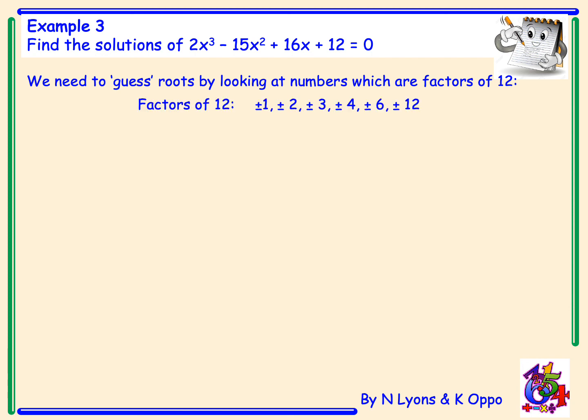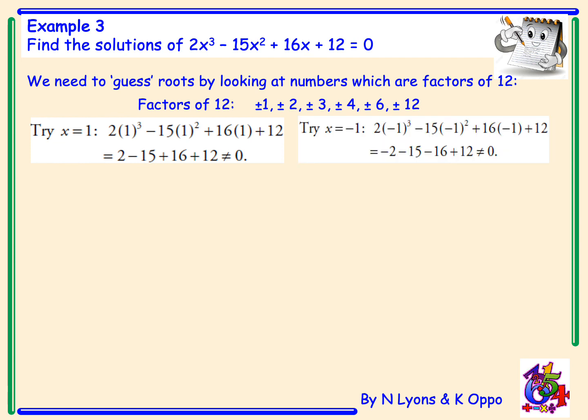Factors of 12 would be ±1, ±2, ±3, ±4, ±6, or ±12. Using the remainder and factor theorem, putting 1 through f(x) does not give 0, so x - 1 cannot be a factor. Putting x = -1 also does not give 0, so x + 1 will not be a factor either.